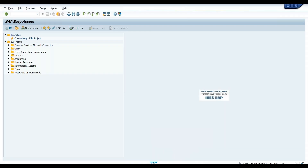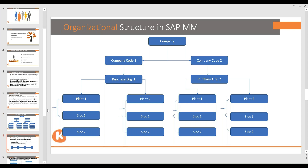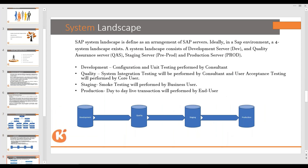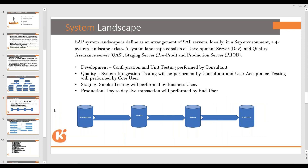Now we are coming to the system landscape. An SAP system landscape is defined as an arrangement of SAP servers. Ideally, in an SAP environment, a four-system landscape exists. A system landscape consists of a development server, a quality assurance server, a staging server, and a production server.